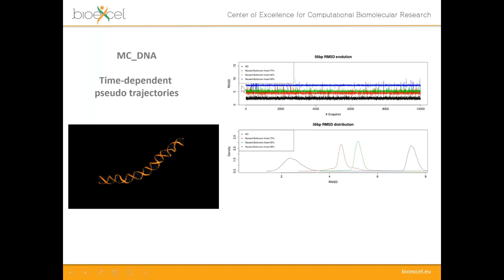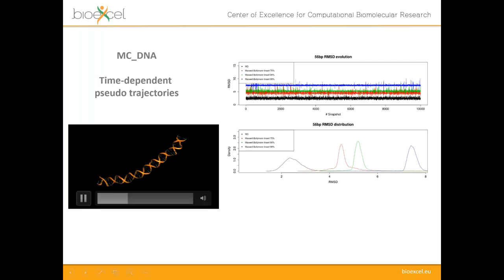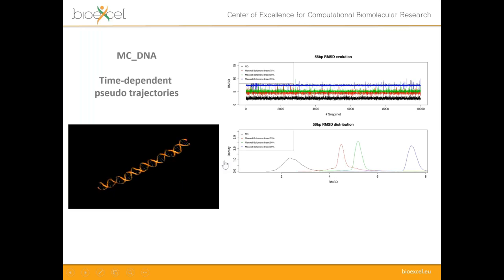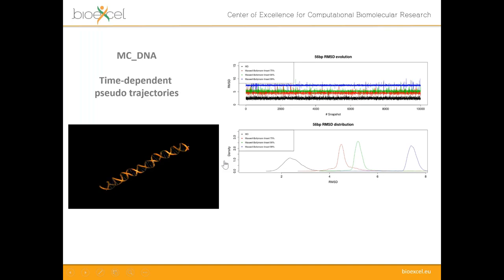To make the ensemble of DNA structures resemble molecular dynamics trajectories, we order snapshots so that the neighboring RMSD is minimal. We developed an algorithm that holds the neighboring RMSD at a constant level with a certain variance, shuffling each DNA structure of the trajectory to resemble an atomistic MD simulation. A video illustrates this reordering of the ensemble of snapshots.